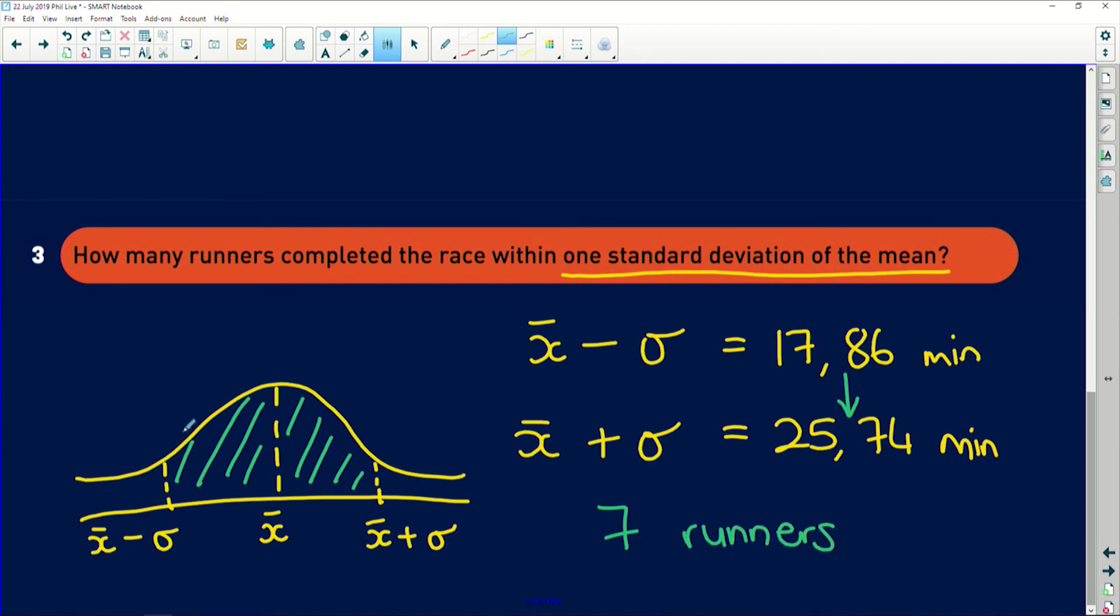So basically, we have seven runners sitting in this interval over here, and then one or two on the outskirts, and one or two on the upper outskirts. Okay. So that is how you would find how many runners raced or completed the race within one standard deviation of the mean. Fantastic question, Tabisa. So thank you so much for sending it through to us.